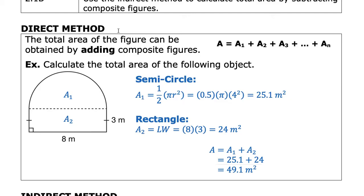So this is the direct method. The total area of the figure can be obtained by adding composite figures. And this is a general formula, just saying add up all of the parts. So however many parts there are. In our case there's two, but this is going up until however many shapes there are, and we'll use the last one as n to say however many there are.